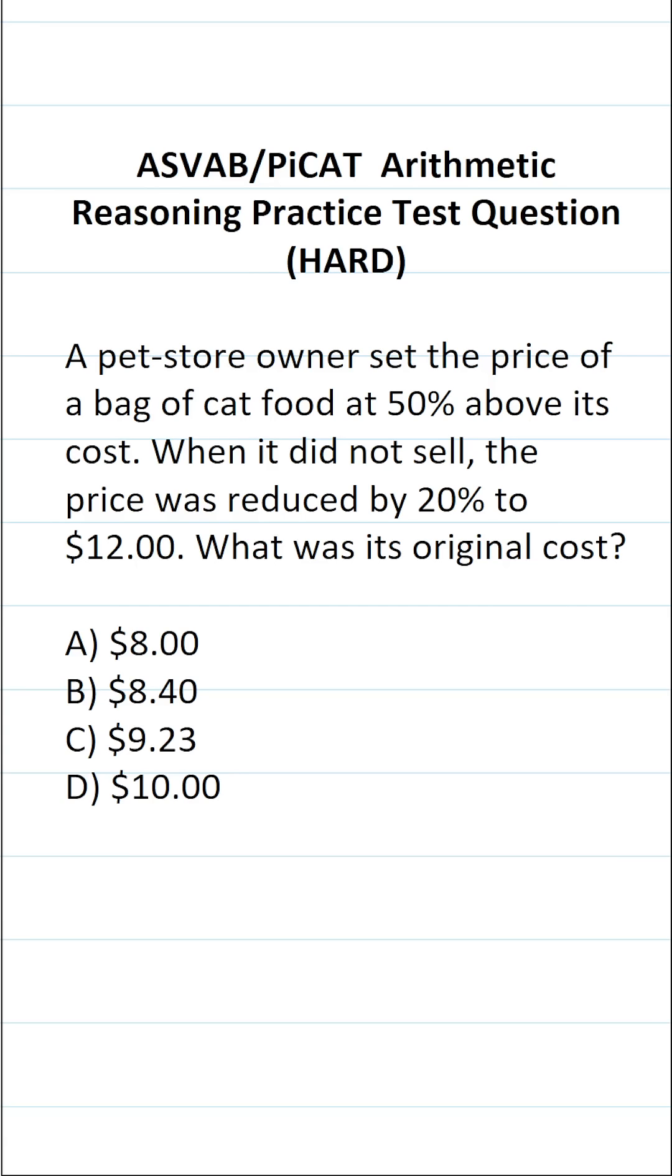So we have to translate these statements into an equation that we can then solve. I'm going to start with this first set of statements right here. The owner set the price. I'm going to let P represent the price of the bag of cat food to be equal to 50% above its cost. That's going to be 1.5 times its cost. So we translated these first two statements into an equation.